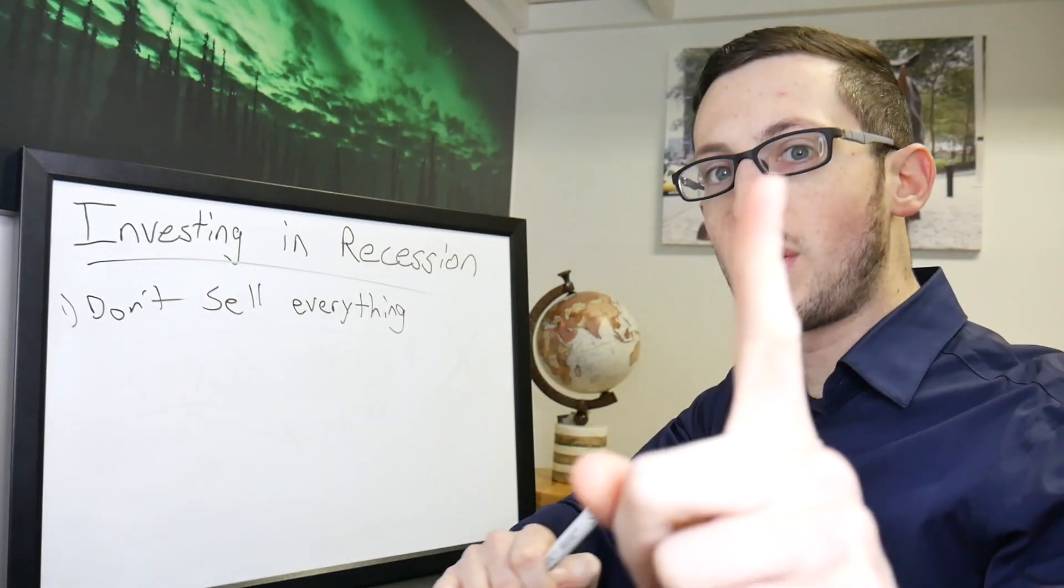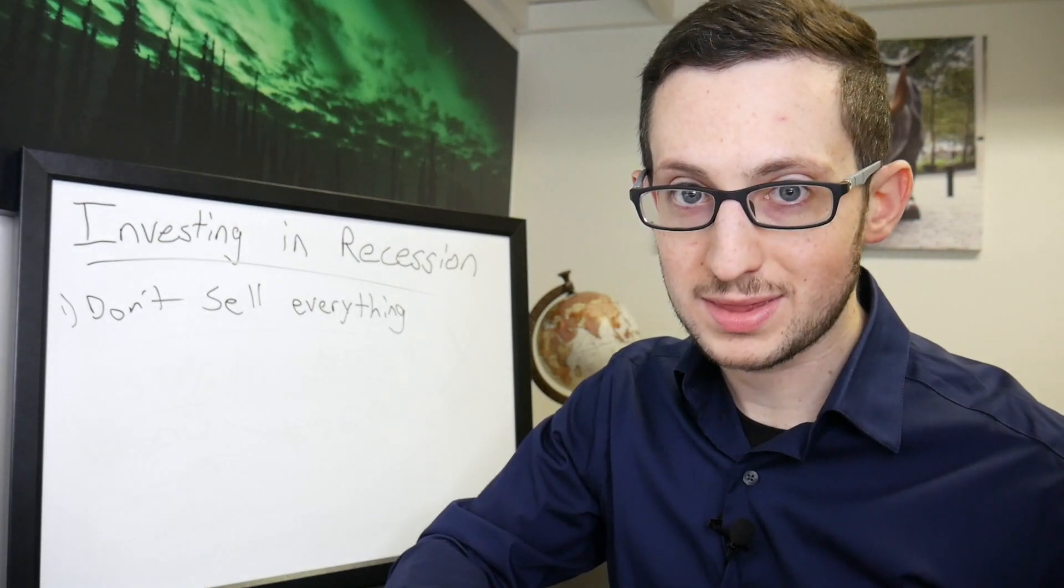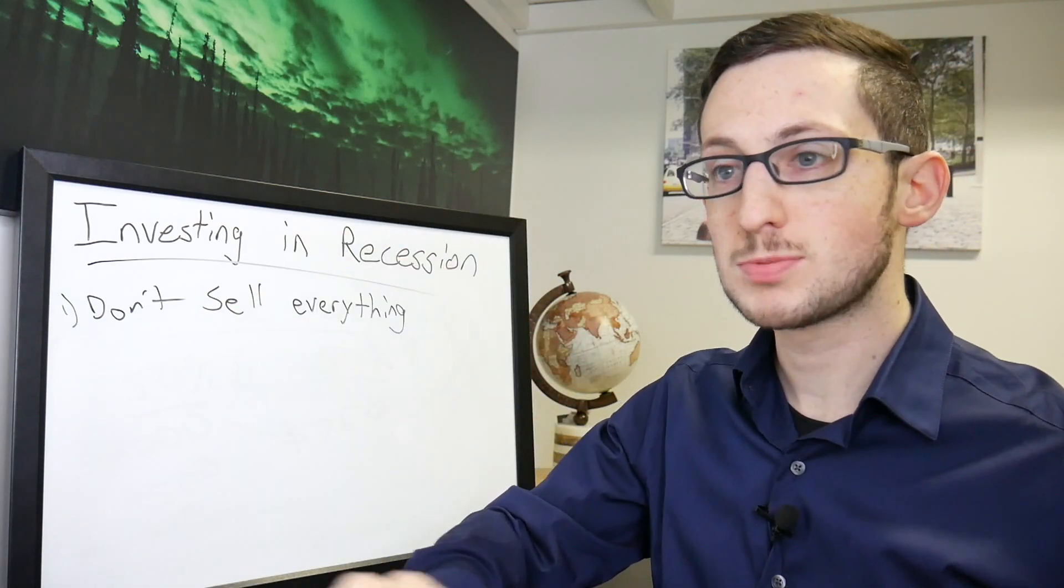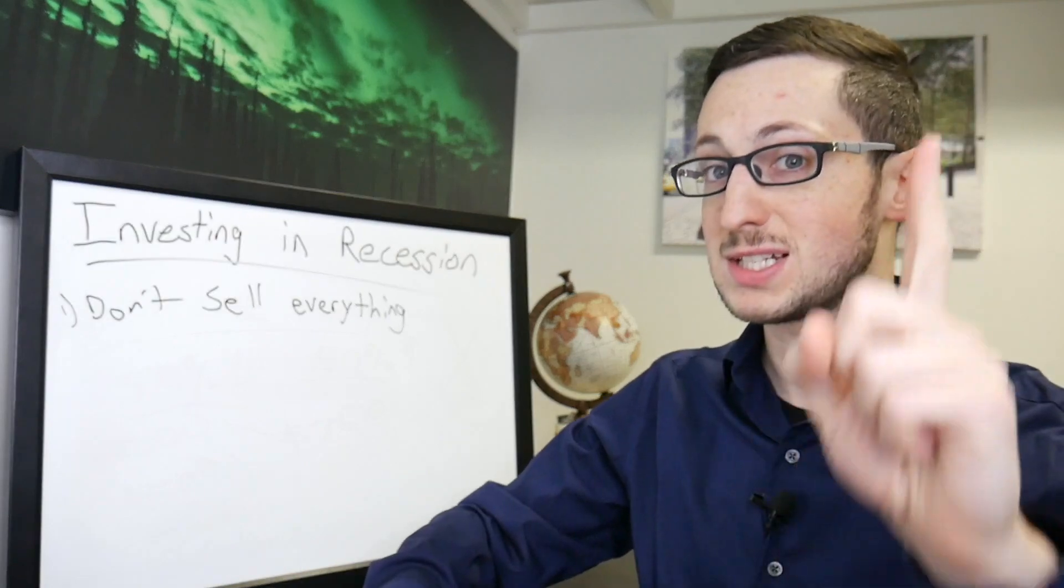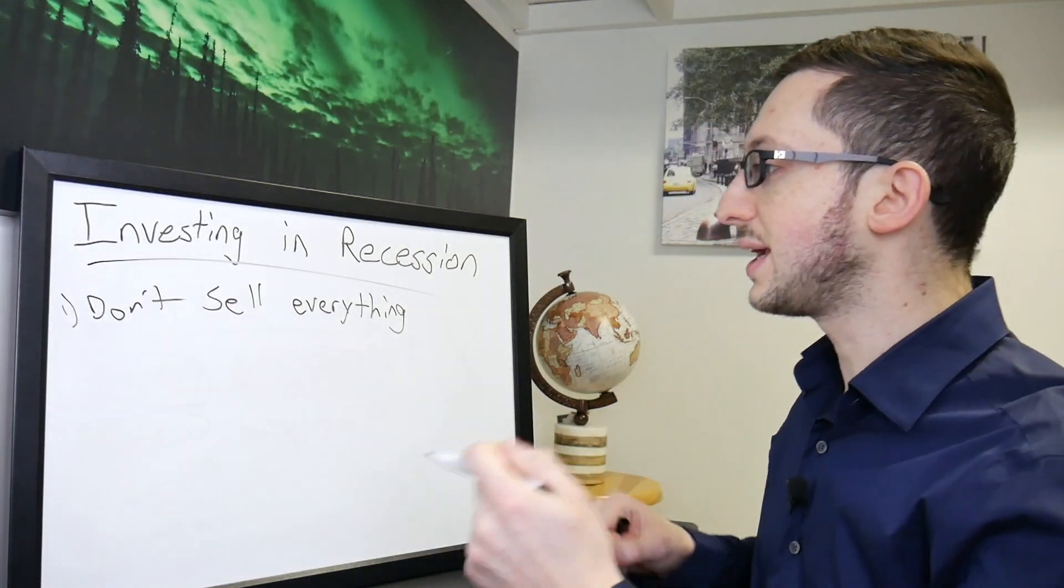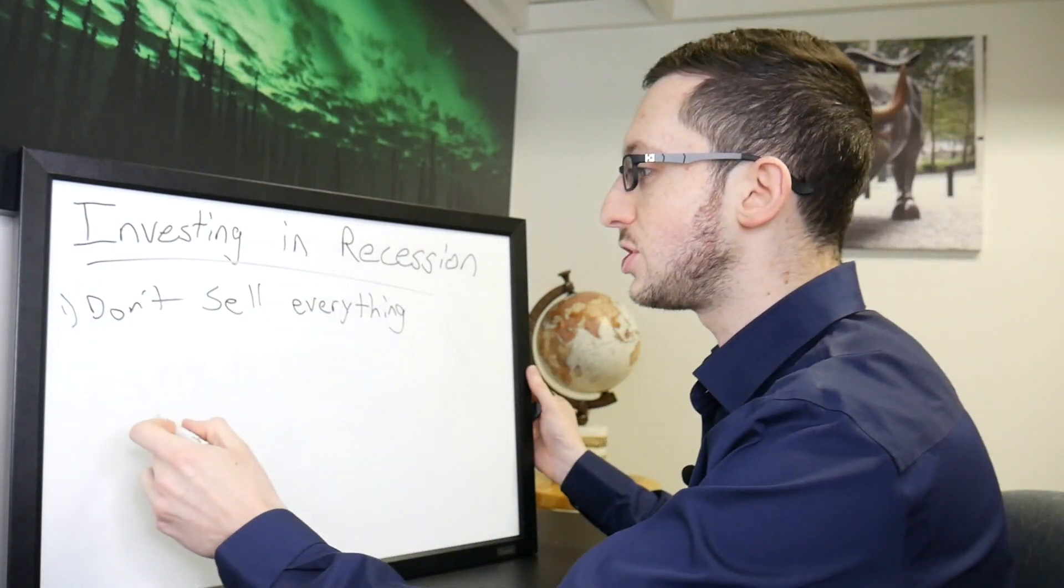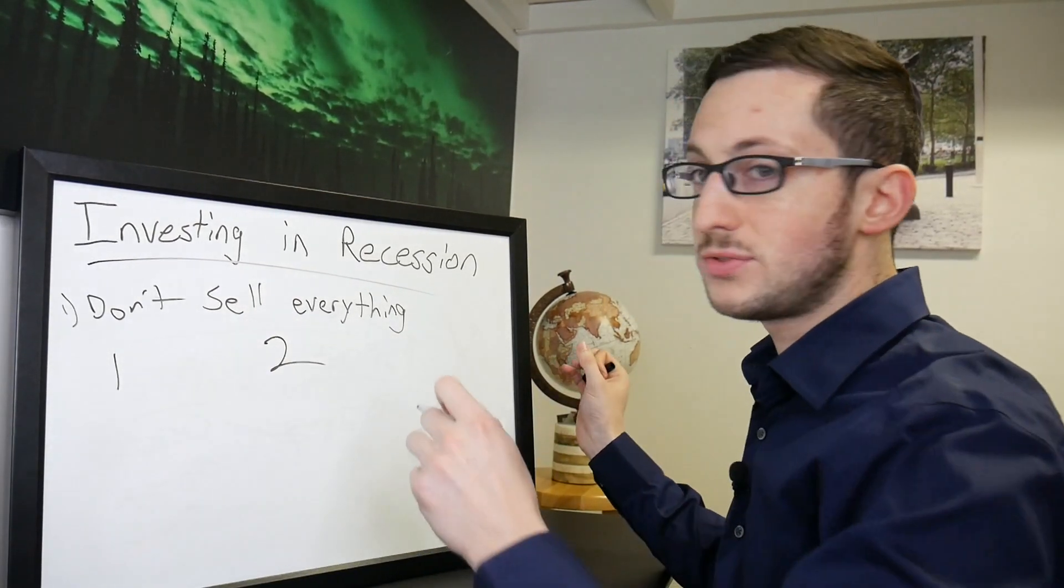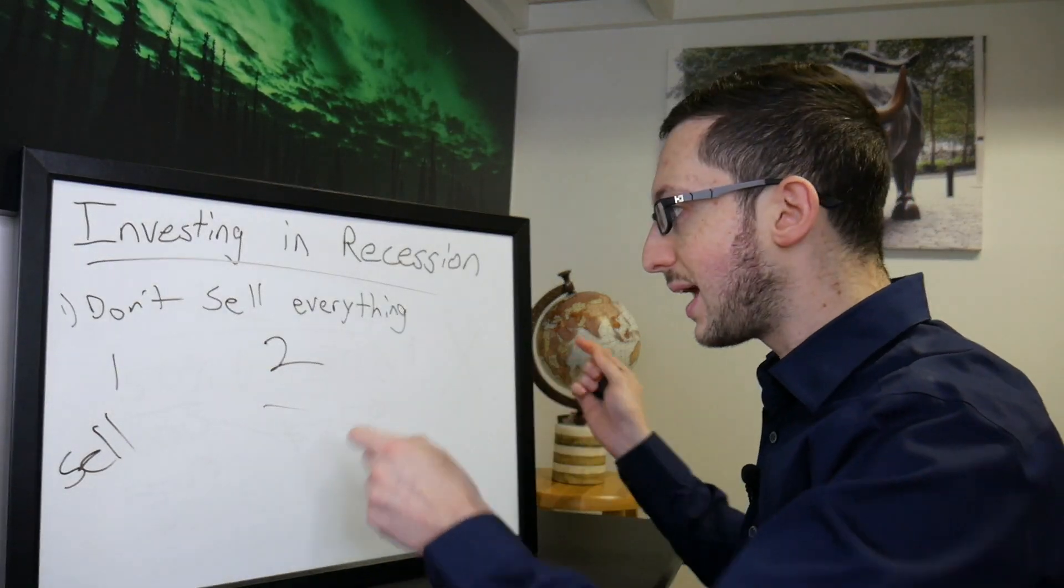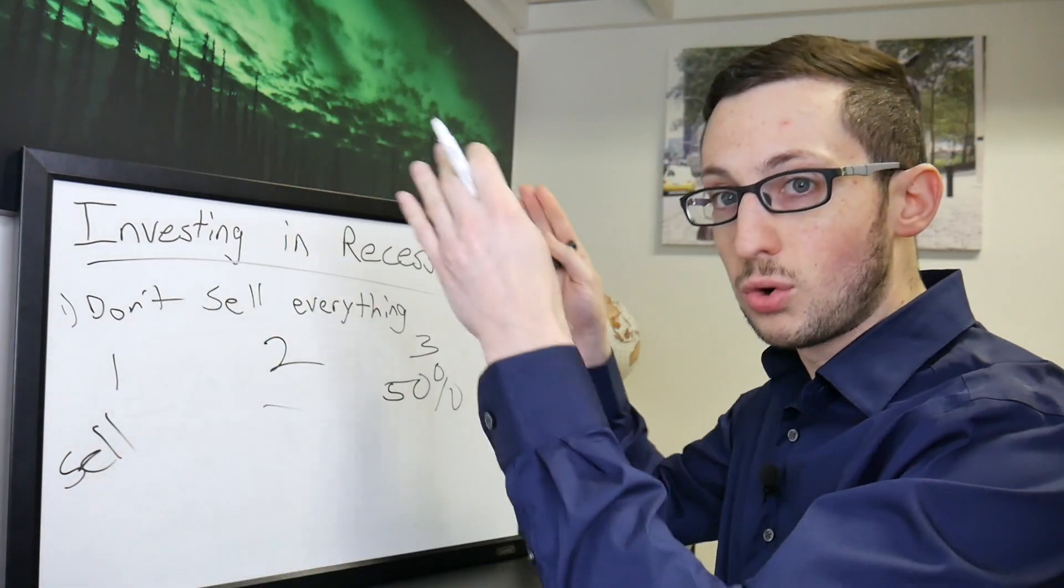Now we're actually starting with number one thing we got to first look at is don't sell everything. This is a timing thing. We cannot time the top of the market, we cannot time the bottom of the market. So if you're just panic selling at this point you should not sell everything unless there's an actual reason. In the next step we're going to see if you want to sell something, but when you're looking at selling something or if you can't sleep at night then you might want to adjust some things. Instead of just having a binary way of doing things of selling everything or doing nothing you could do something else.